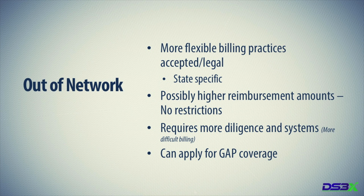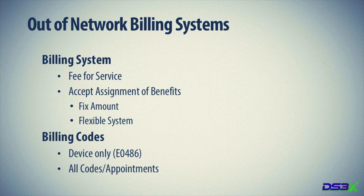Out-of-network billing is a little more difficult, mostly because we don't know the allowable amount. Unless we have an agreement and have gone in-network, we can't consistently know exactly how much the insurance company will allow. The good news is they oftentimes allow more than if you're in-network. You can have more flexible billing practices because you haven't signed contracts. And worst case scenario, if we're not happy with the out-of-network benefits, we can apply for what's called gap coverage. There are three ways of billing this out-of-network.